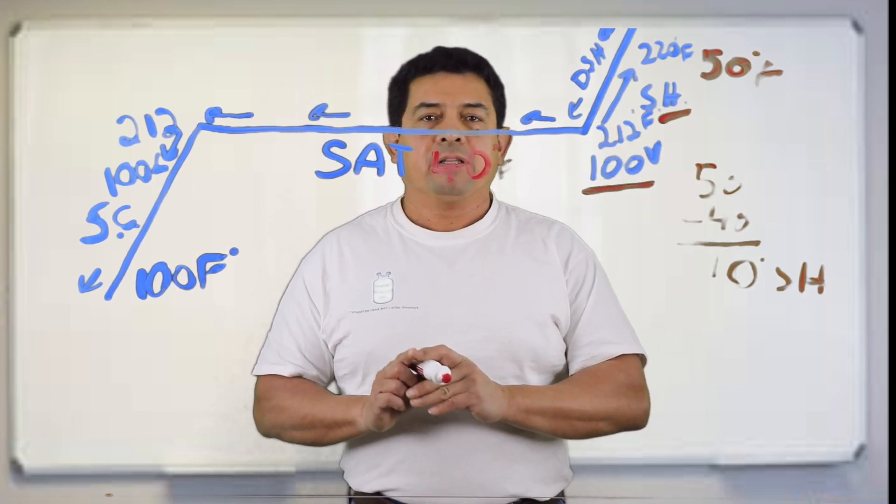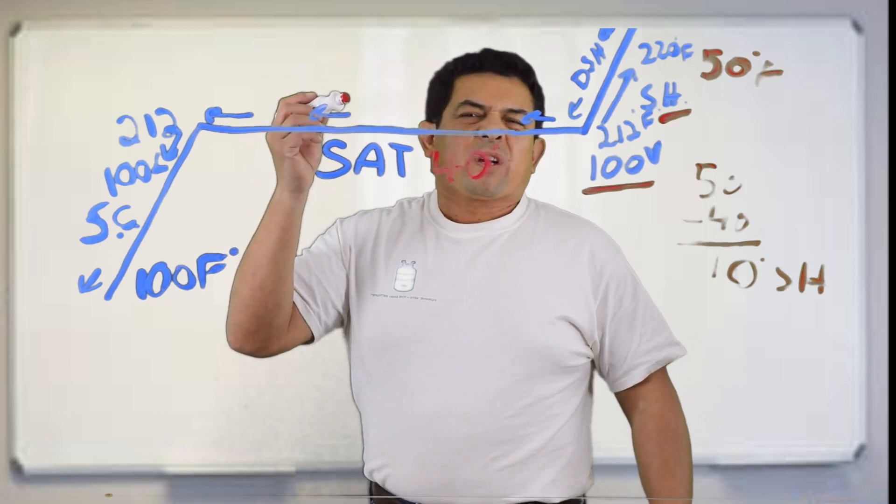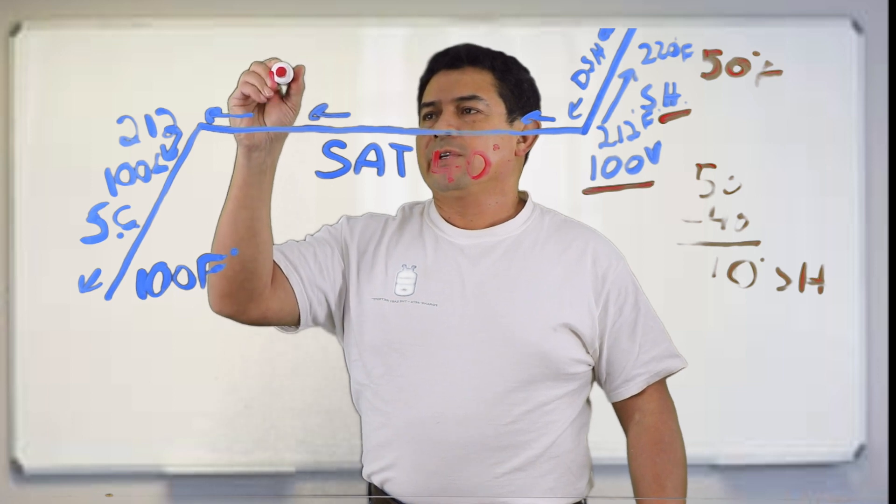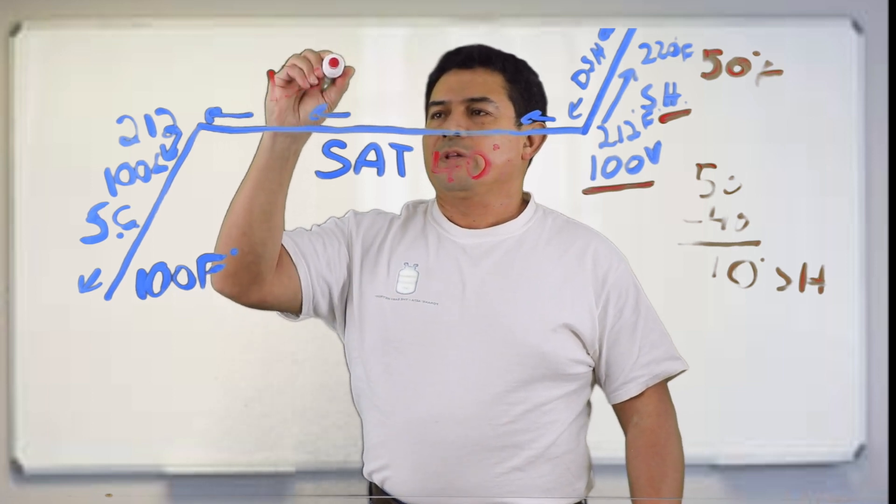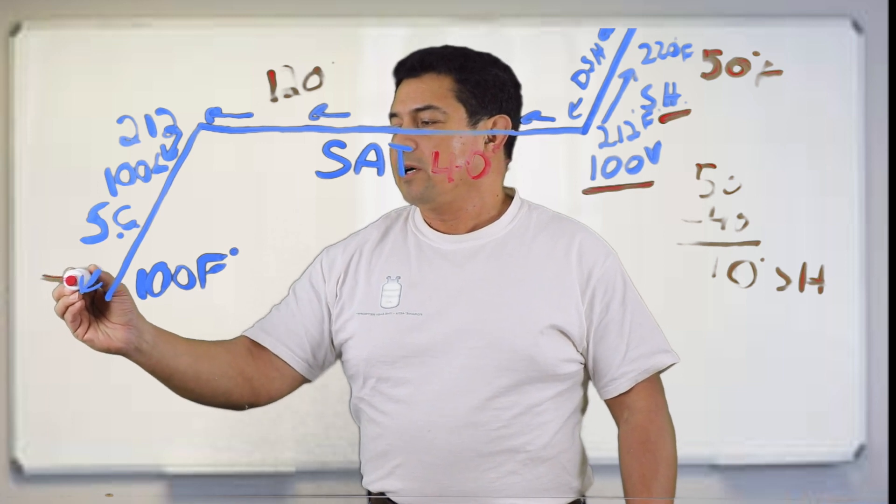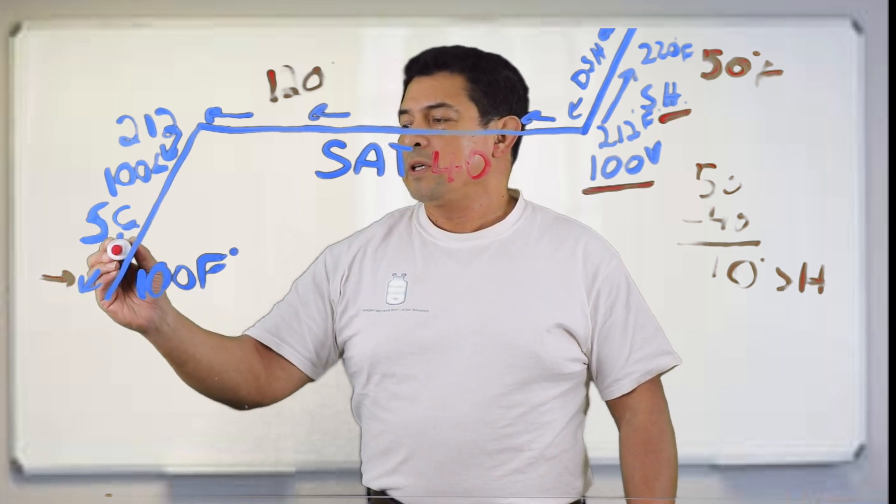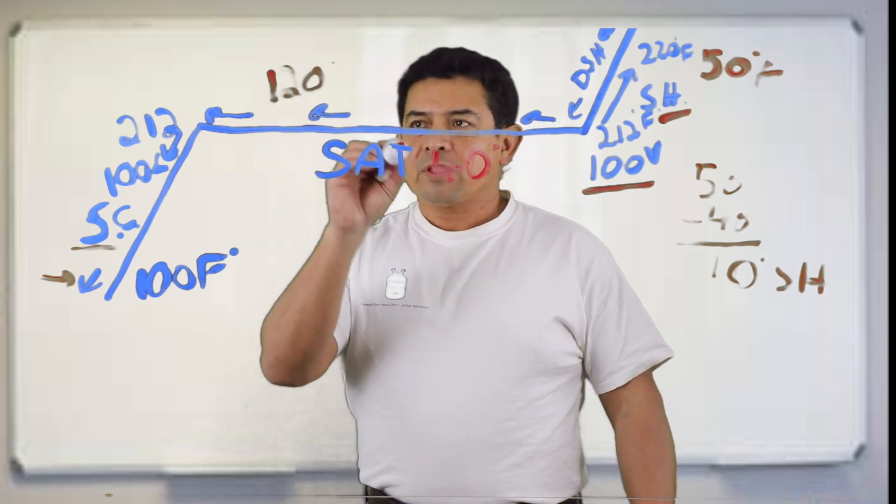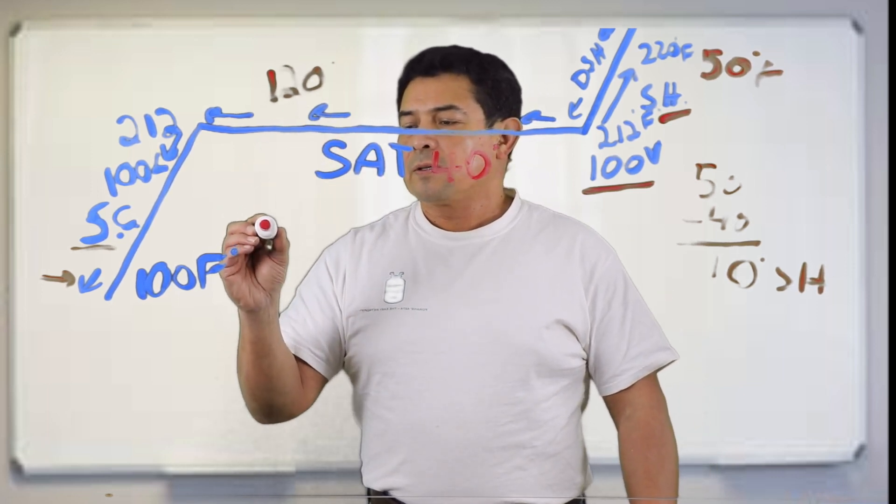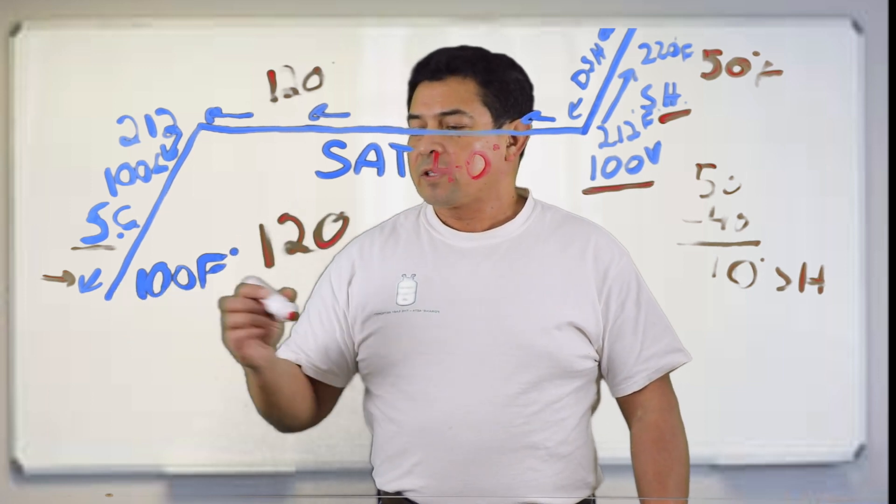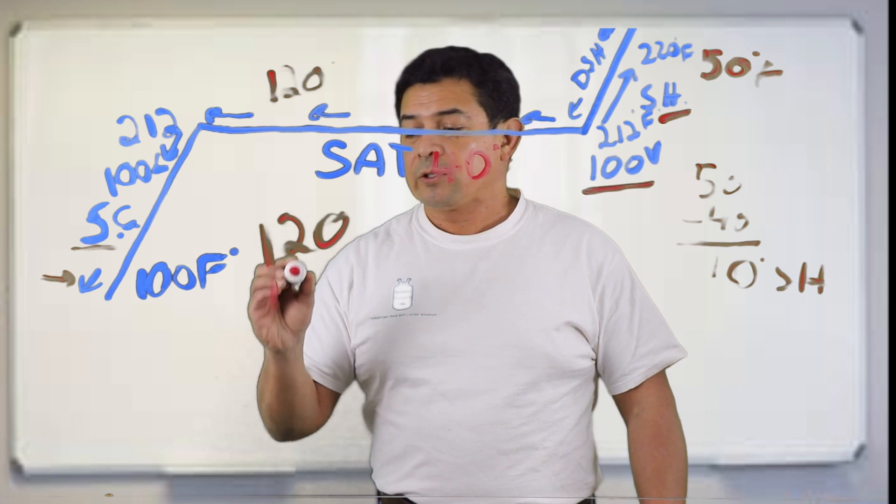On the other hand, if we think about refrigerant, let's say we're condensing the refrigerant in the condenser at 120 degrees. We lower the temperature down to 100. So we subcooled. The saturation temperature in the condenser is going to be 120 degrees. We subcooled, or we lowered the temperature down to 100.